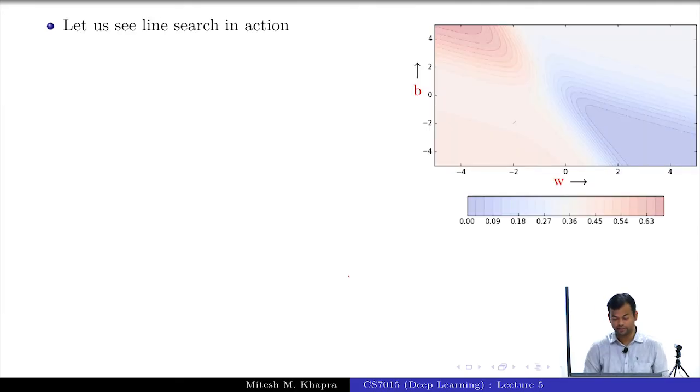Let us see line search in action. This is again gradient descent, this black curve which is visible there. This is the one I am talking about which is run for few iterations and it is just stuck on the steep slope. You know this story now, it just gets stuck there.